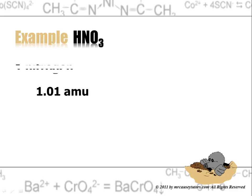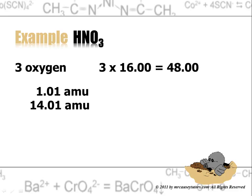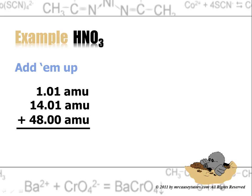And one hydrogen would be 1 times 1.01. And we have one atomic mass unit. Nitrogen. There's only one nitrogen. So that would be 14.01. And there are three oxygen. And 3 times 16 is 48. Add them up. And what do we get? 63.02 atomic mass units of HNO3.